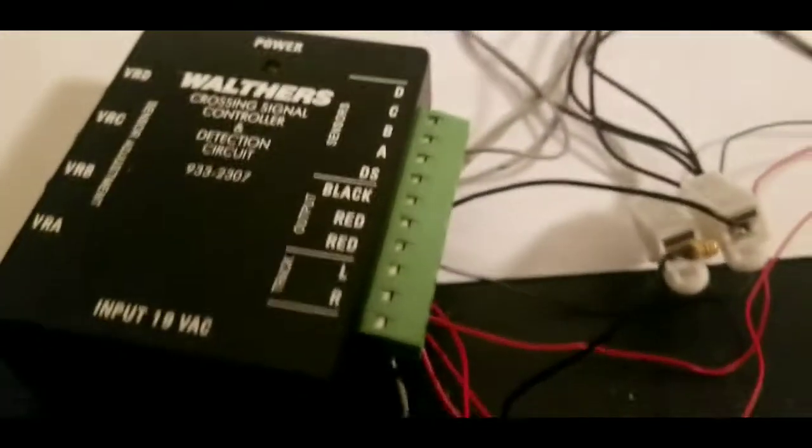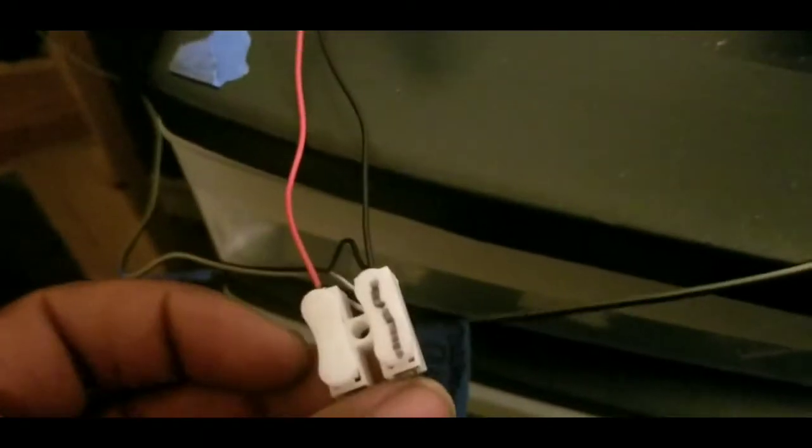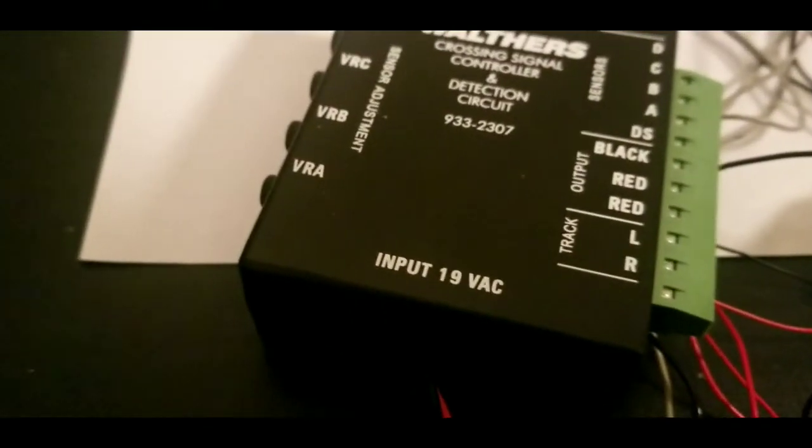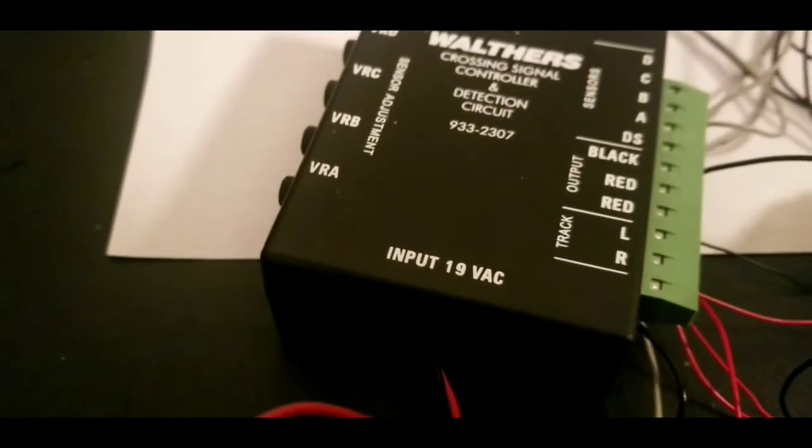And what I did was I took the L and R wires and I made them kind of a loop into my plug here. And I marked one side for the black wire. And then what happens is that goes right back into the input VAC.